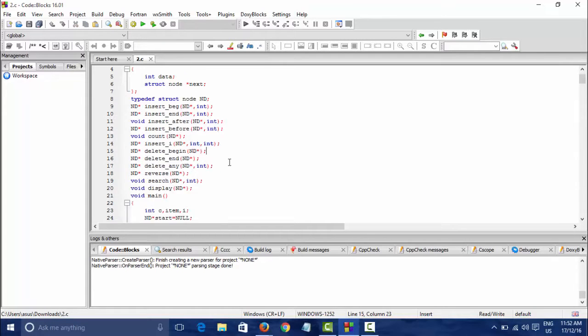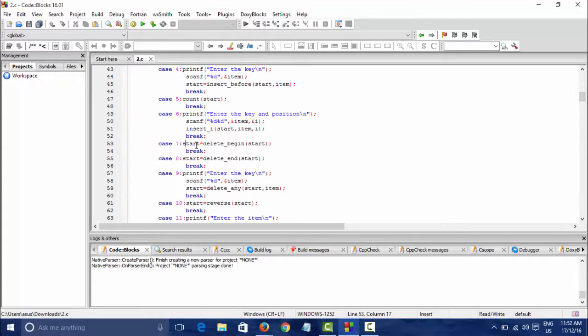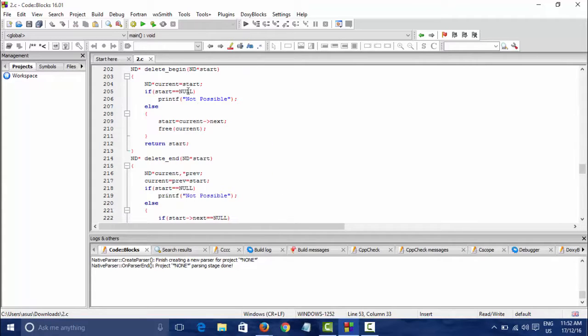So this is the prototype and this is the delete at the beginning. So when start and current equals to start, for the first case when there is null, we cannot delete anything so not possible. And for the other case we simply need to change the current start because we're at the beginning and we are done. We will free it and we will just see how it works.